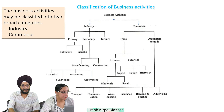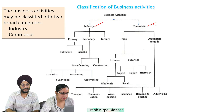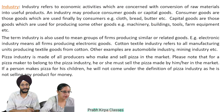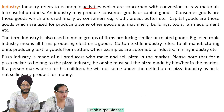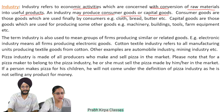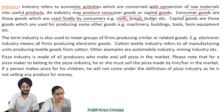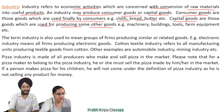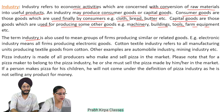Business activities may be classified into two broad categories: industry or commerce. Industry refers to economic activities which are concerned with conversion of raw materials into useful products. An industry may produce consumer goods or capital goods. Consumer goods are those used finally by consumers, for example clothes, bread, butter, etc. Capital goods are those used for producing other goods, for example machinery, buildings, tools, farm equipment, etc. The term industry is also used to mean groups of firms producing similar goods, for example the electronic industry means all firms producing electronic goods.